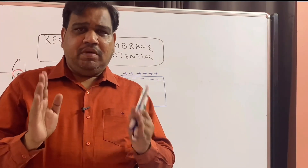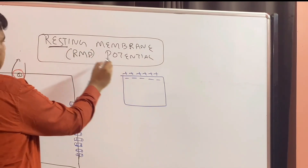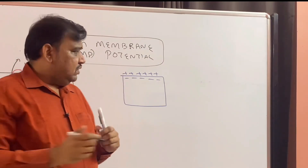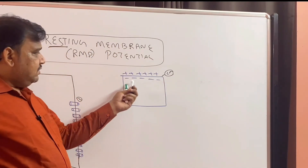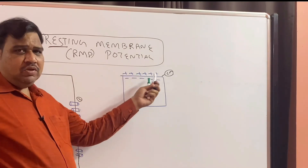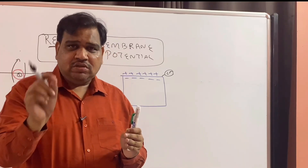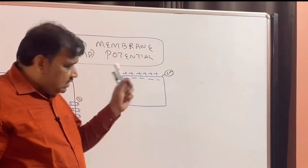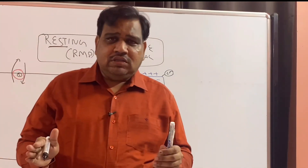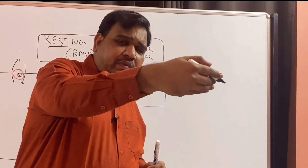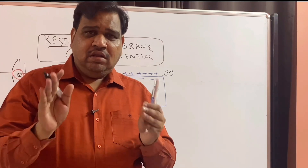What is resting membrane potential? As the name suggests, 'resting' — so when the cell is at rest. For example, this is the cell membrane, and you can see that inside the cell membrane is negative and outside is positive. During rest, there is still a potential difference between outside and inside. So the definition of resting membrane potential is the potential difference between outside and inside of the cell membrane when the cell is at rest. This is called resting membrane potential, or RMP.